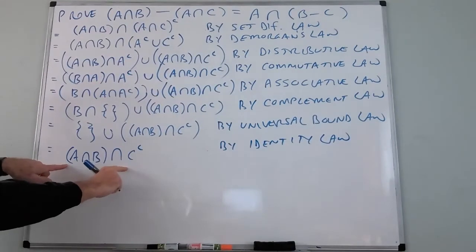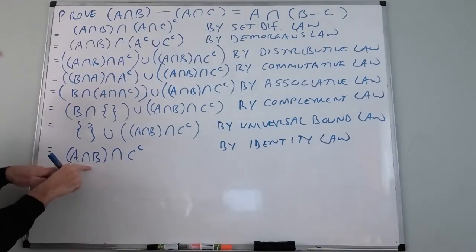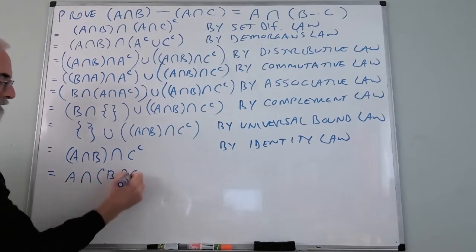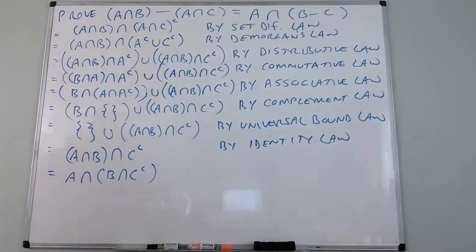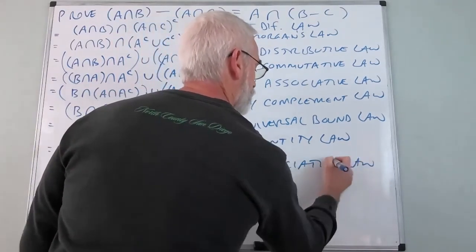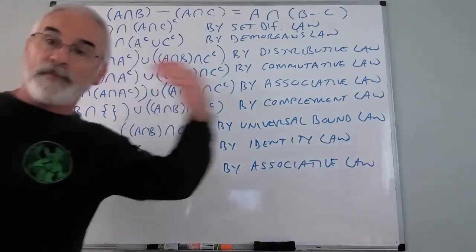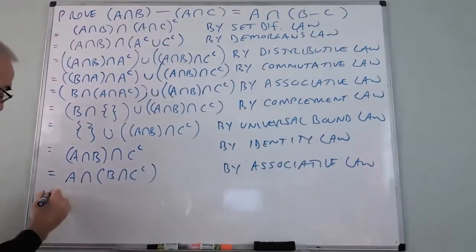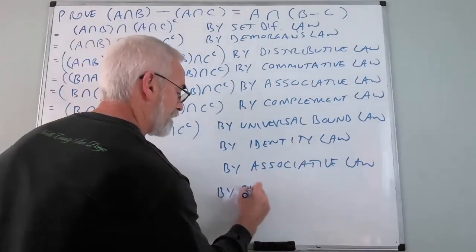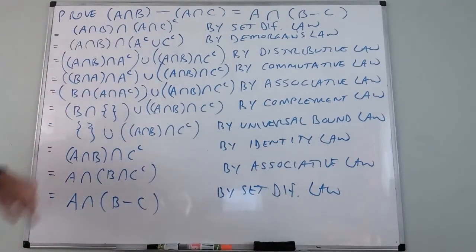We're left with A∩B∩C^c. Now I regroup as A∩(B∩C^c) using the associative law. Finally B∩C^c = B − C by the set difference law. So A∩B∩C^c = A∩(B − C), which is exactly the right side. The proof is complete in ten steps.